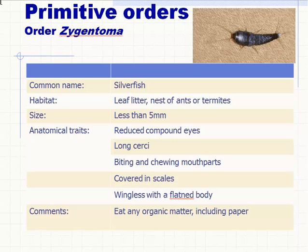Hi all, welcome to topic two, part two of our deeper look into insects. We've looked at the anatomical features characteristic to arthropods and the class Insecta beneath that. Now we're going to look at particularly relevant insects to vineyards.